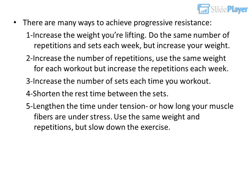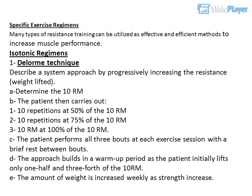Specific exercise regimens — isotonic regimens: 1. DeLorme technique describes a system approach by progressively increasing the resistance (weight lifted). A. Determine the 10RM. B. The patient then carries out: 10 repetitions at 50% of 10RM, 10 repetitions at 75% of 10RM, and 10RM at 100% of 10RM. C. The patient performs all 3 bouts at each exercise session with a brief rest between bouts. D. This approach builds in a warm-up period as the patient initially lifts only 50% and 75% of the 10RM. E. The amount of weight is increased weekly as strength increases.